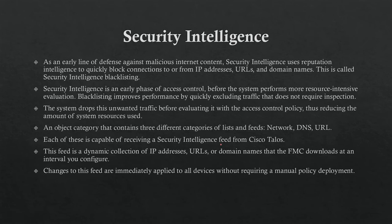Security Intelligence has three types: either per network (IP address), per DNS, or per URL. We'll see the difference between them and when we use each. Each type is capable of receiving a Security Intelligence feed from Cisco Talos. The Cisco Talos team works day and night to update these feeds to keep your environment secure.